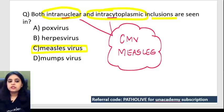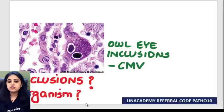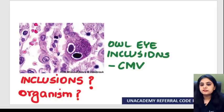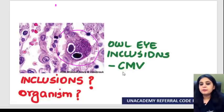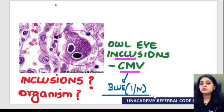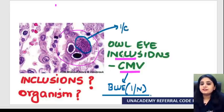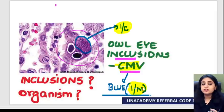Looking at the images: the first image is the owl eye inclusion seen in cytomegalovirus. You can appreciate a giant cell with blue-colored eyes — blue intranuclear inclusions. There's also a cluster of intracytoplasmic inclusions present. So cytomegalovirus shows both intracytoplasmic and intranuclear inclusions.